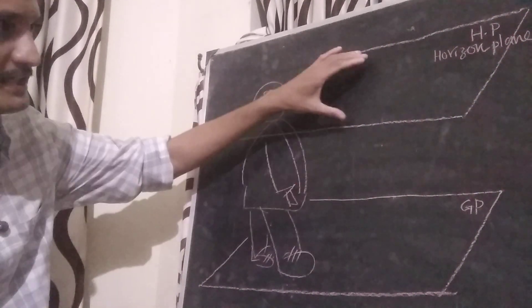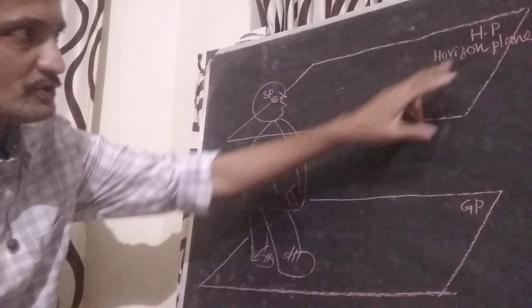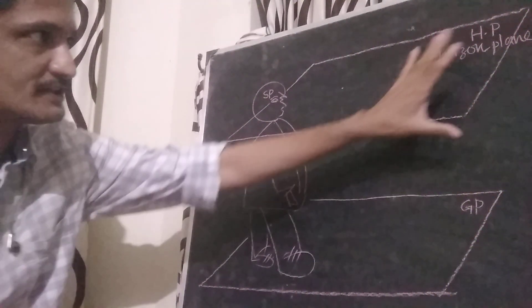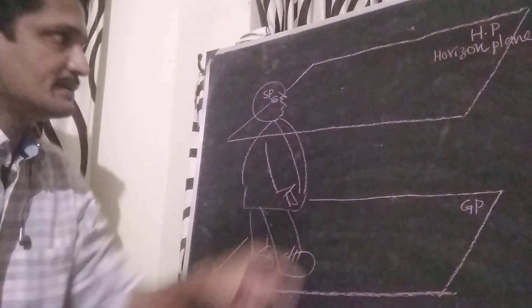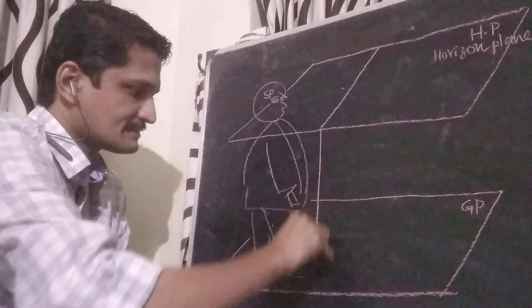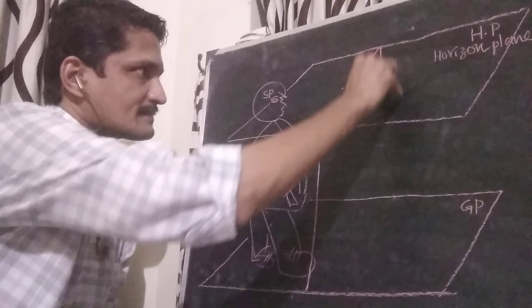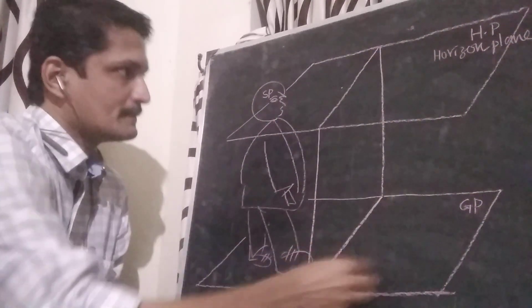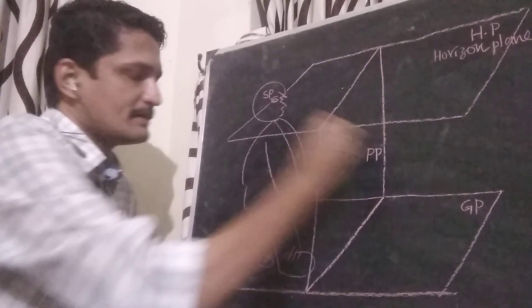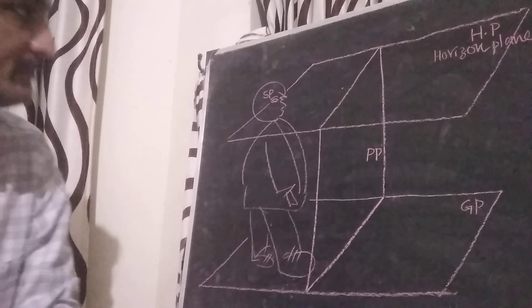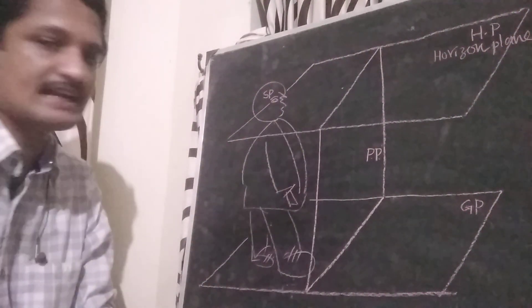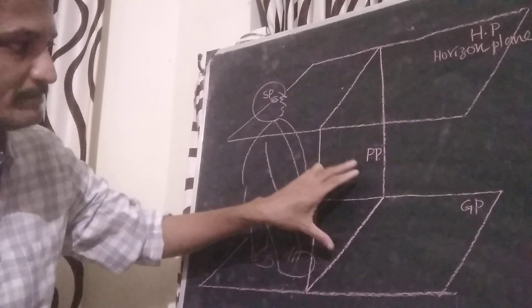So, GP then HP. Next, a plane which is perpendicular to both HP and GP — that plane is known as the picture plane, PP. A plane which is perpendicular to both HP and GP is called PP, picture plane.